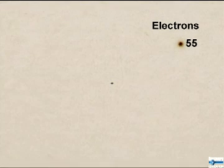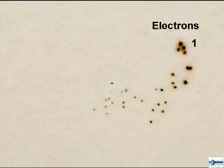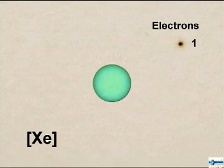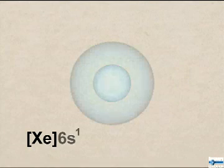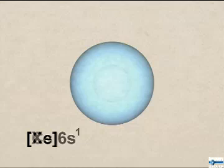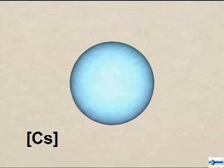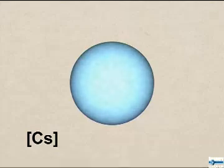Xenon has 54 electrons distributed among five orbital shells. Cesium has one more electron than xenon. This single electron is found in the sphere-shaped 6s orbital shell. Cesium, like the other alkali metals, is highly reactive and loses this lone valence electron readily to other elements.